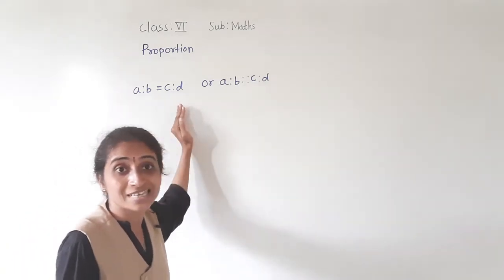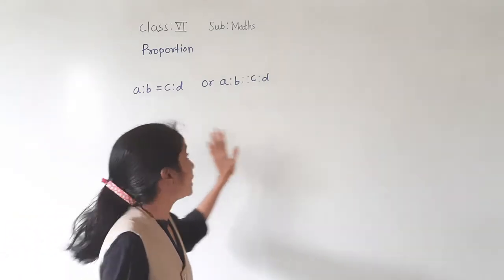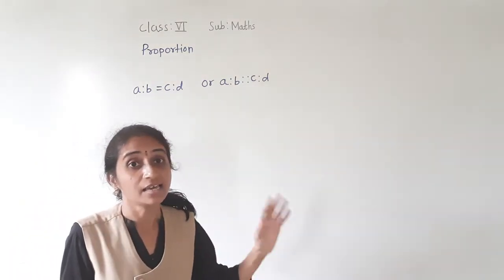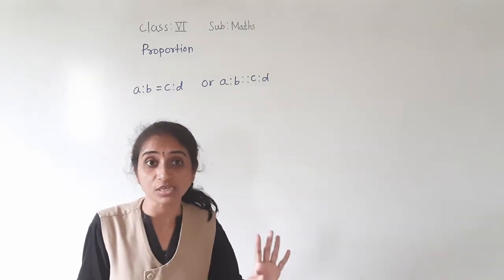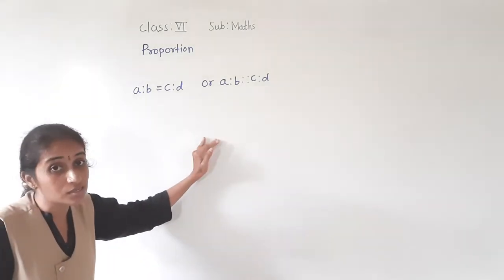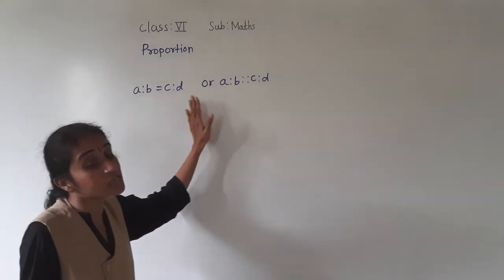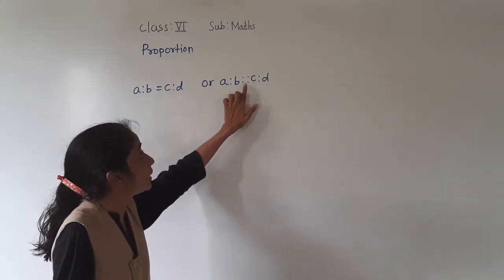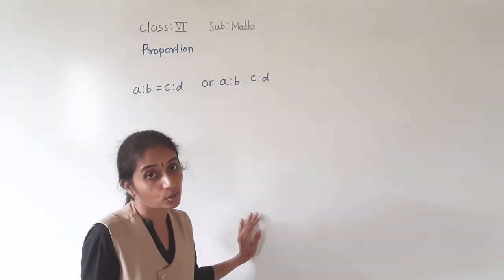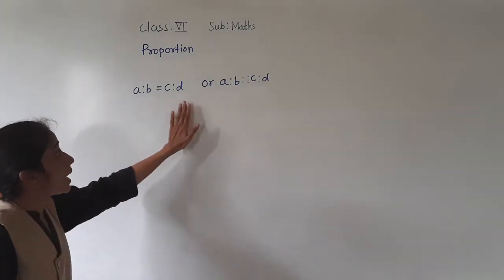These are four terms in the proportion: A, B, C, and D. So what is proportion — understood? How to write it and how to read it is understood. A is to B as C is to D.